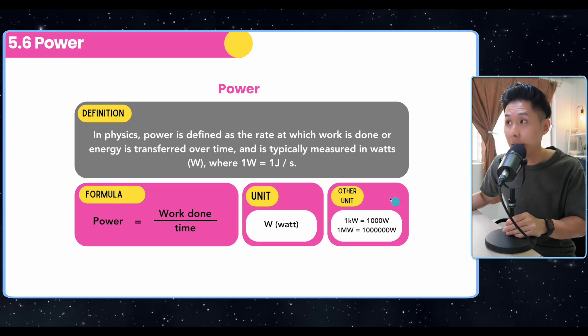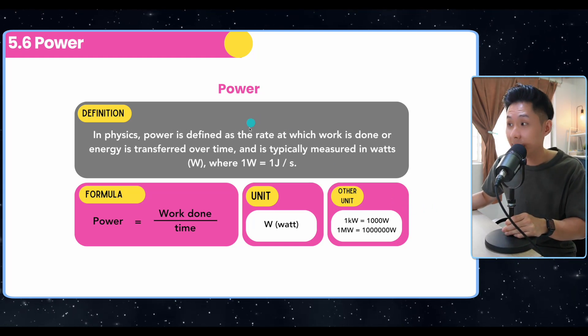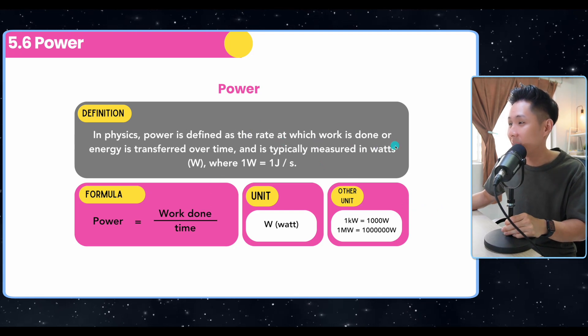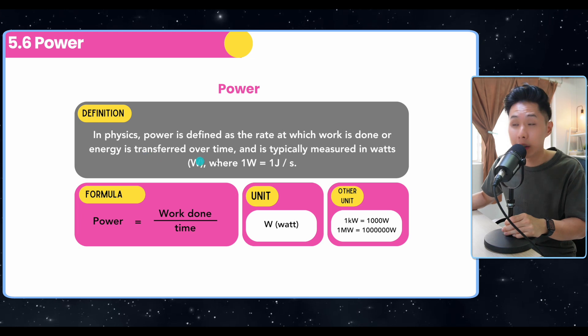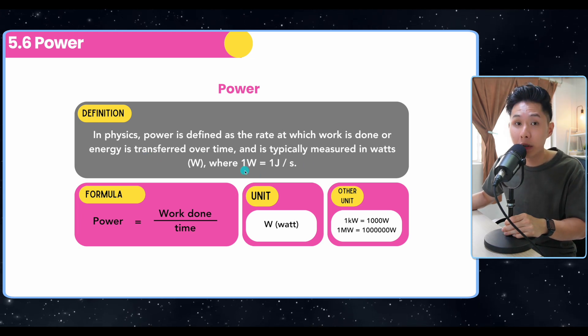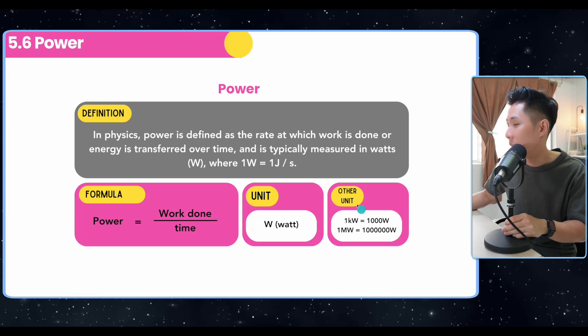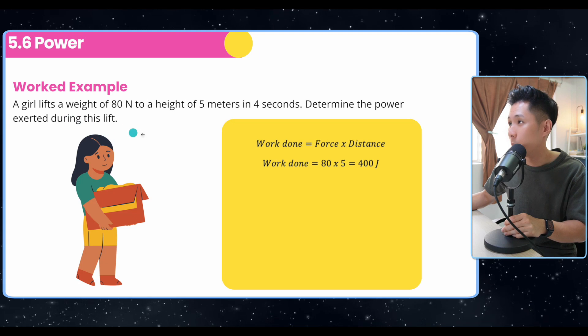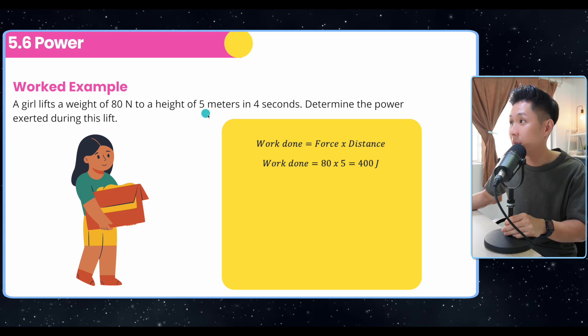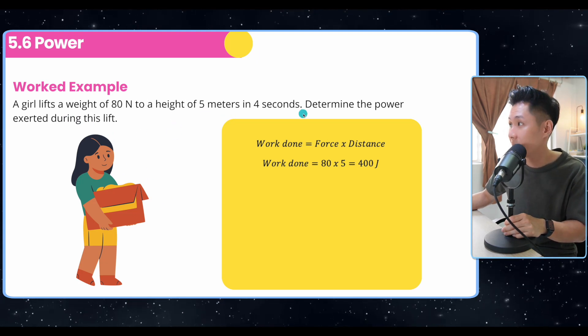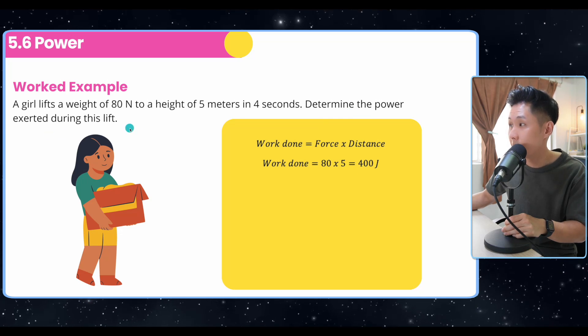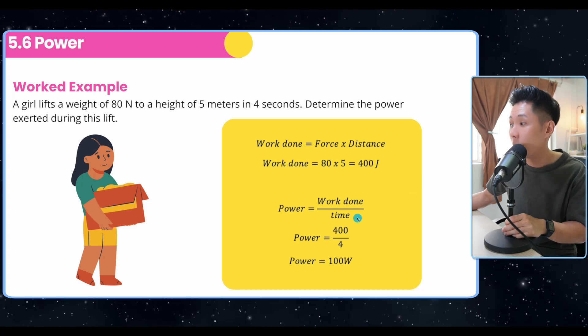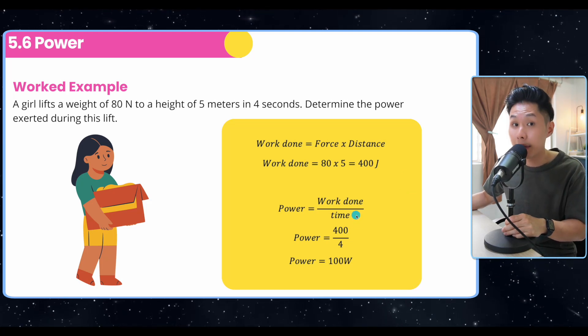Last sub-chapter of the day, which is the concept of power, is also related to energy, but it is the rate at which work is done or the rate at which energy is transferred. One watt means one joule is transferred per second. So we have other units: kilowatt, megawatt, etc. So let's solve a question real quick. A girl lifts a weight of 80 Newton to a height of five meters. We know that GPE has increased in four seconds. Determine the power exerted during this lift. So the work done here is 80 Newton multiplied by five, and we just have to divide it by four to find out what's the power of the interaction here.